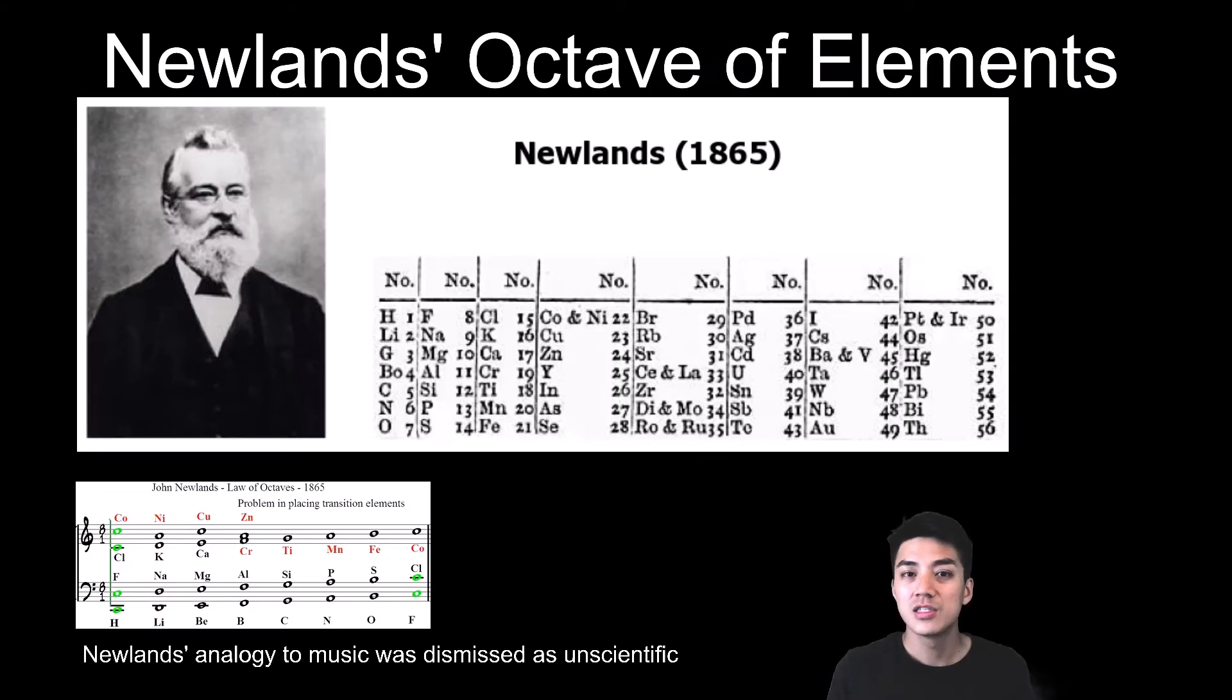English chemist John Newlands was one of the first to notice that if you arrange the elements by order of increasing mass, every eight elements would have the same properties. He called this the Law of Octaves because it was similar to how notes on the musical scale repeat every octave. There were some discrepancies in how he arranged the elements, and ultimately his idea was dismissed as being unscientific because he used a musical analogy.